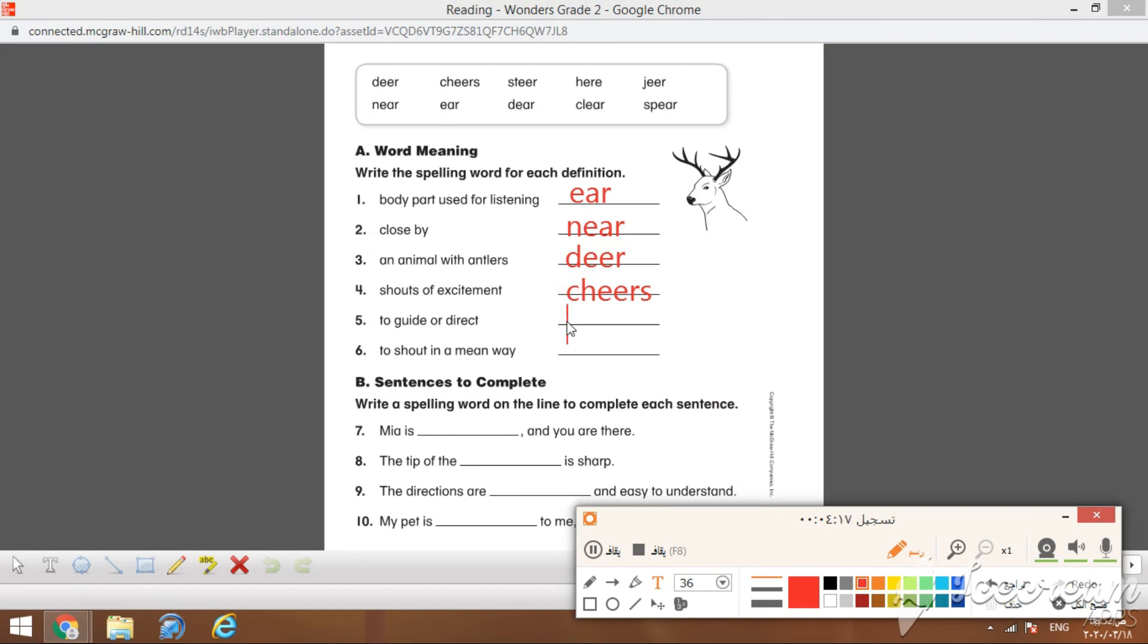Next will be to guide or direct, which is number 5: S-T-double-E-R, steer. Last one, number 6, which is jeer, double-E-R pattern. Its meaning is to shout in a mean way.